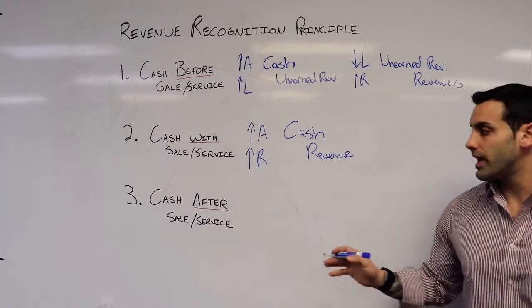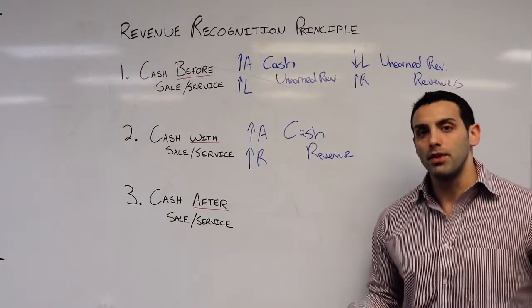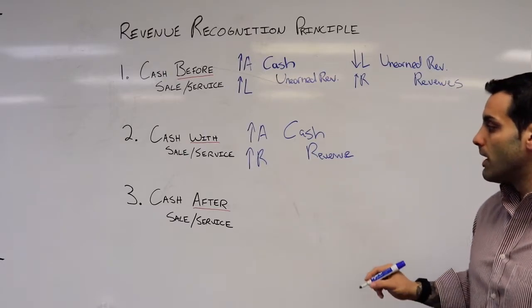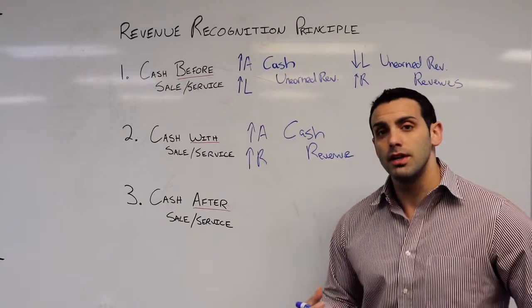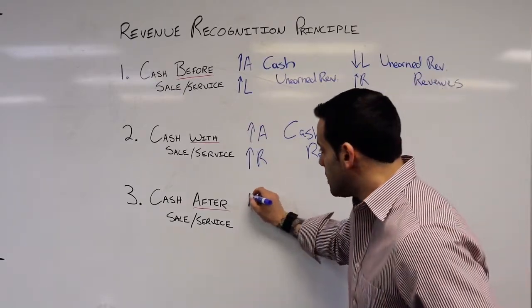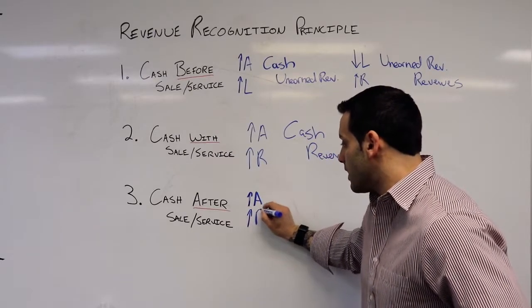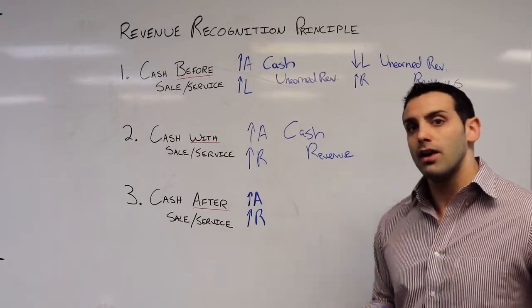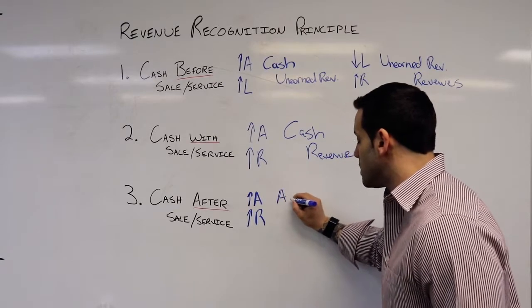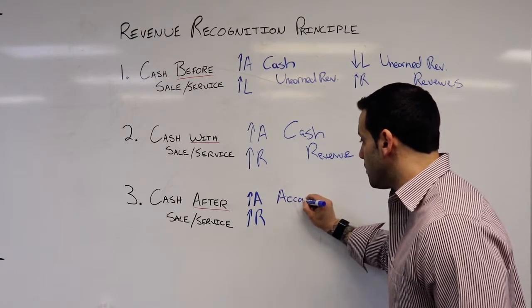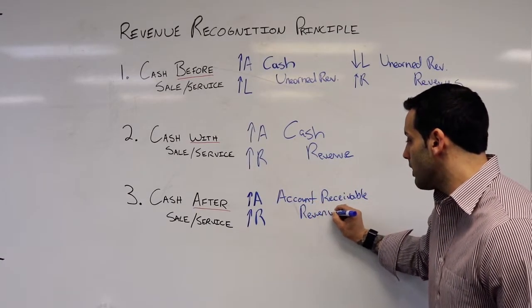In the third and final example, cash is received after we perform the sale or service. So this means our customer owes us money. We earned it, they haven't paid yet. So this is an asset. And since we have completed the sale or service, we are going to recognize revenue. So this will result in an account receivable and revenue being recognized.